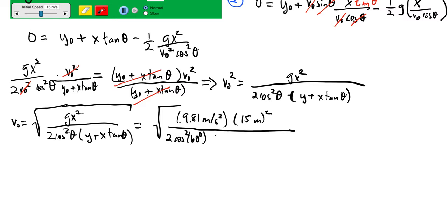5 meters, that's the initial height, plus 15 meters times the tangent of 60 degrees.